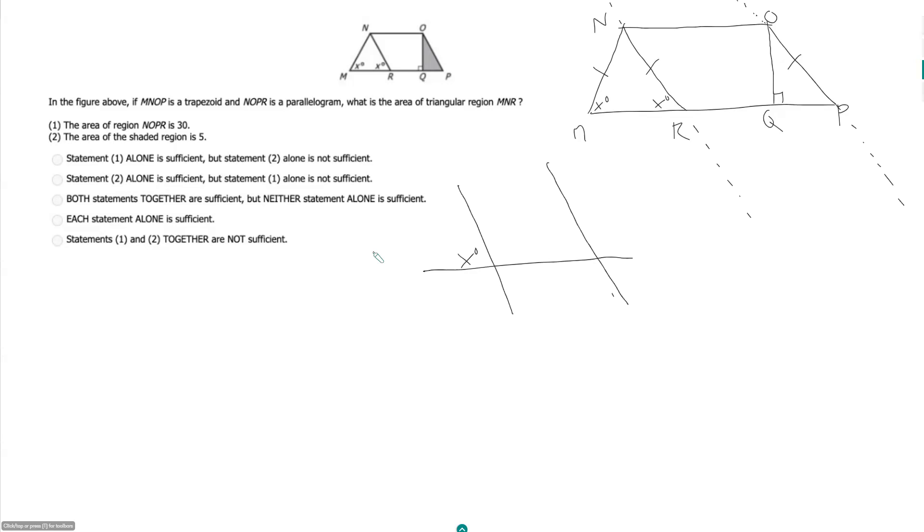And so this angle here, which is in triangle QOP, and this guy here should also be X. Because this guy here should match here, this guy here should match here. Then the same here. This should match here, and this should match here. But the point is this angle here should also be X.